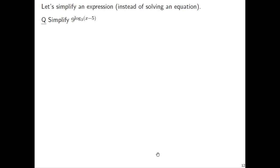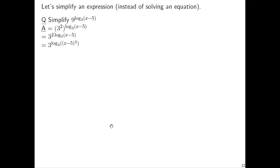Now let's simplify an expression instead of solving an equation. For our practice question, let's simplify 9 to the power log base 3 of x minus 5. You can replace the 9 with 3 to the 2, since 9 equals 3 squared. Then apply the law of exponents: 3 to the 2, to the log base 3 of x minus 5, means we multiply those exponents. We have 3 to the power 2 times log base 3 of x minus 5. Now there's a law of logarithms we can apply — that 2 moves from being the coefficient in front of the logarithm to becoming the exponent of the input to the logarithm.